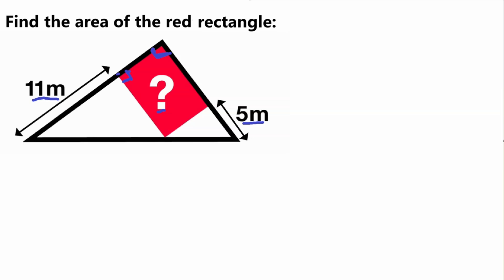Since that angle is 90 degrees, the adjacent angle is also equal to 90 degrees, because together they make a straight line of 180 degrees. So since one half is 90, the other part is also 90. That means this smaller triangle here is also a right triangle.